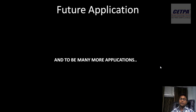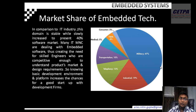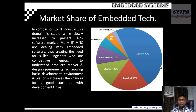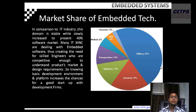Now you can understand what an embedded system is — it is a combination of hardware and software to make devices intelligent. In today's scenario, we need everything to be intelligent, from a satellite to our mobile phone to our toothbrush. The embedded system has a very huge market share, and if you are going to work in embedded technology, then definitely you are going to a bright future.